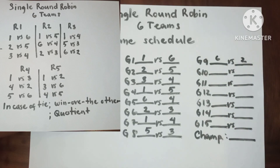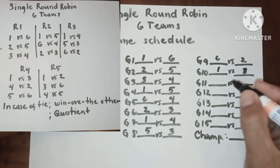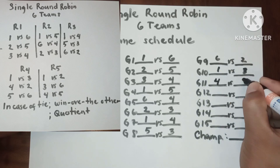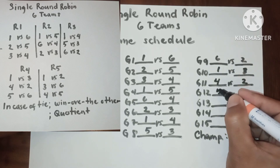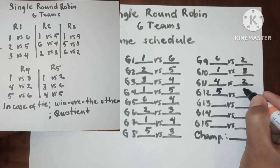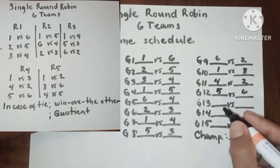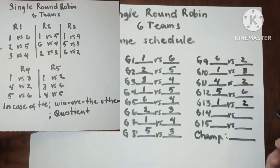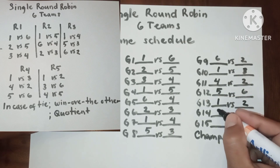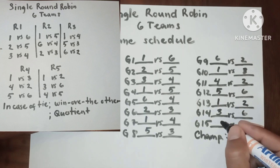In round four, we have: one versus three, four versus two, and five versus six. In round five, we have: one versus two, three versus six, and four versus five.